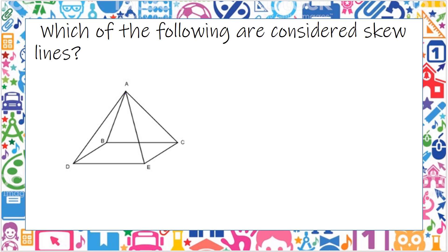Every edge — AE, AC, AB, and AD — are all skew lines. AB, AC, AD, and AE are all skew lines because they are not parallel or perpendicular to the base.